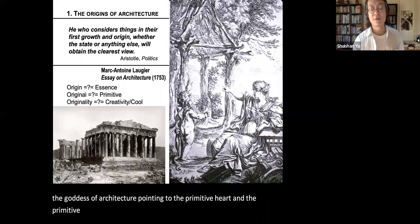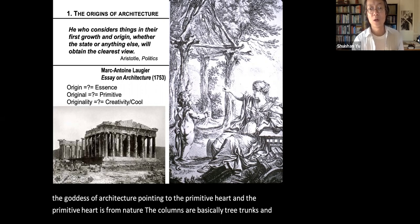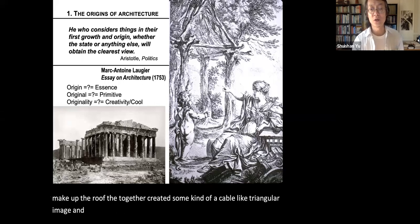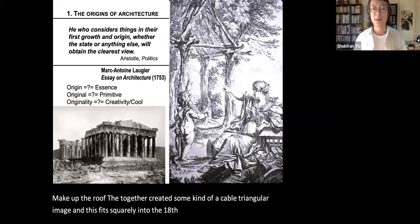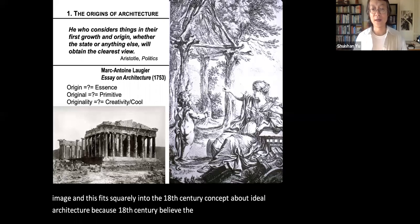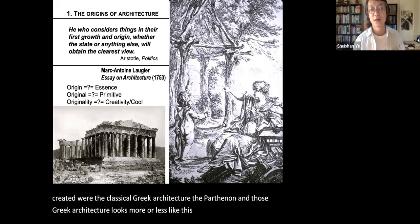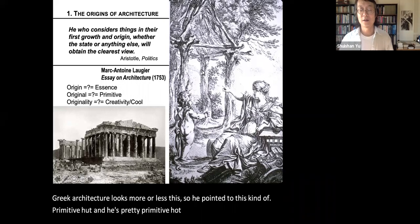In his book on the origin of architecture, he has an illustration showing the goddess of architecture pointing to the primitive hut. The primitive hut is from nature — the columns are basically tree trunks, and the tree branches make up the roof. They together create a gable-like triangular image. This fits squarely into the 18th-century concept of ideal architecture, because the 18th century believed the greatest architecture ever created was classical Greek architecture, like the Parthenon. So his primitive hut looks like a Greek temple.